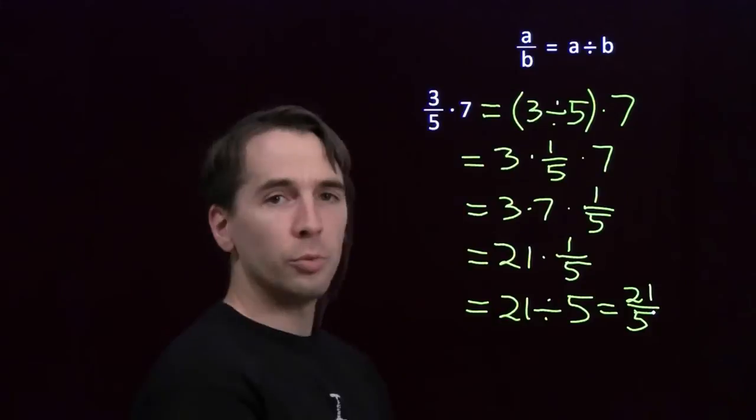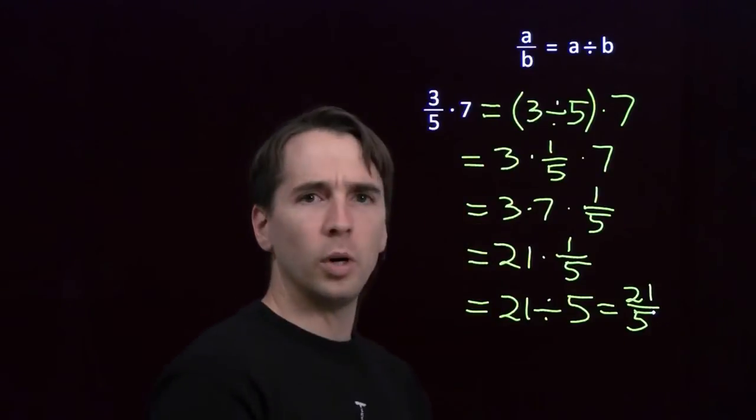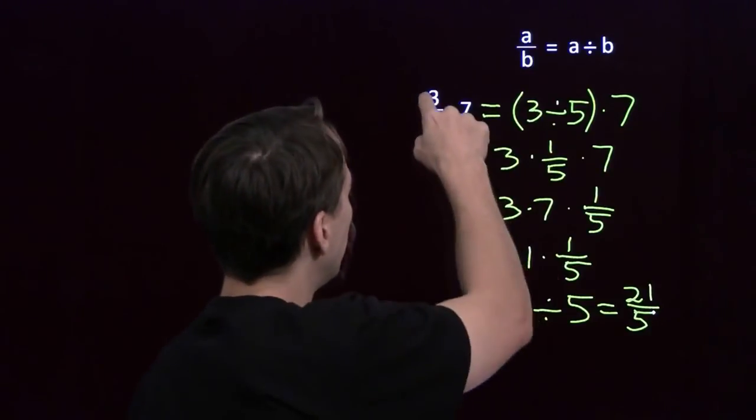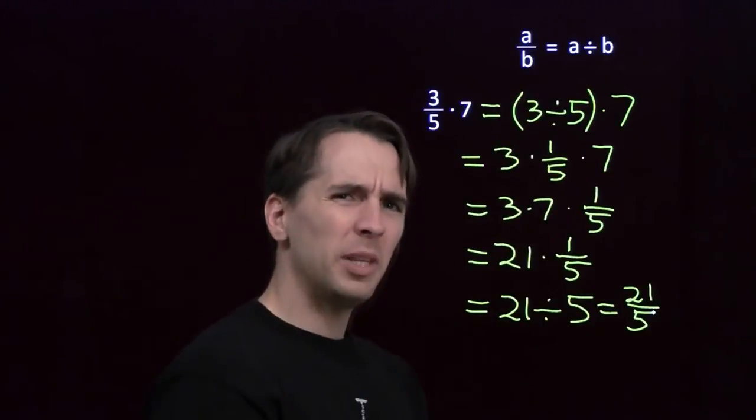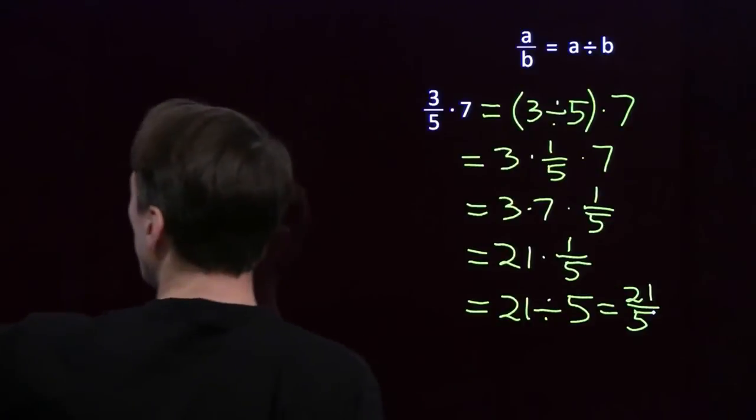So our answer to 3 over 5 times 7 is just 21 over 5. 3 times 7 is 21, 5 on the bottom. Maybe that's a coincidence. Let's try something a little more complicated.